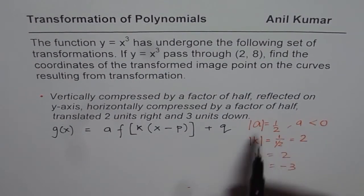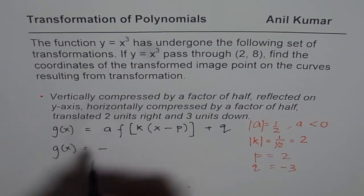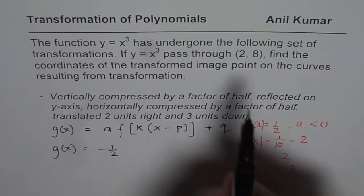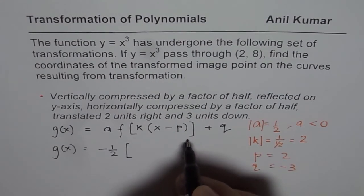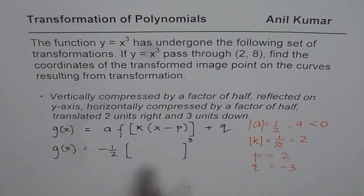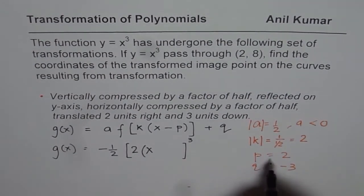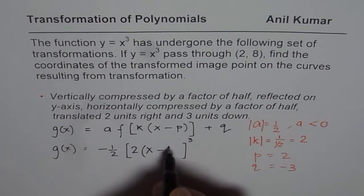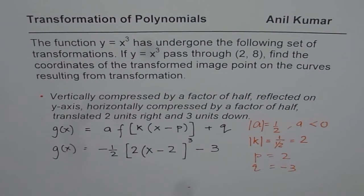Since a is less than 0, we can write g(x) as equals to negative — that is how we get negative. The value, absolute value is half. The function is x cubed. So I'll replace this with the function. k is 2 for us, so k is 2, x minus p is 2, so minus 2. And q is minus 3, minus 3. So that is how you should be writing the equation from the given description of the transformations.